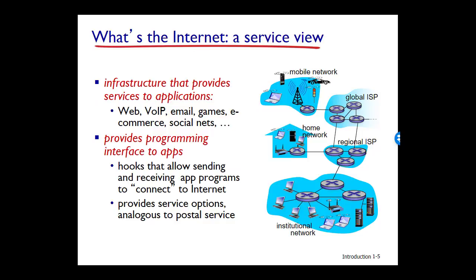Our discussion so far has identified many of the pieces that make up the Internet. But we can also describe the Internet from an entirely different angle — namely, as an infrastructure that provides services to applications. These applications include things like email, web surfing, Facebook, social networks, instant messaging, voice over IP, video streaming, Netflix, distributed games, peer-to-peer file sharing, television over the Internet, and remote login services. These applications are said to be distributed applications since they involve multiple end systems that exchange data with each other.